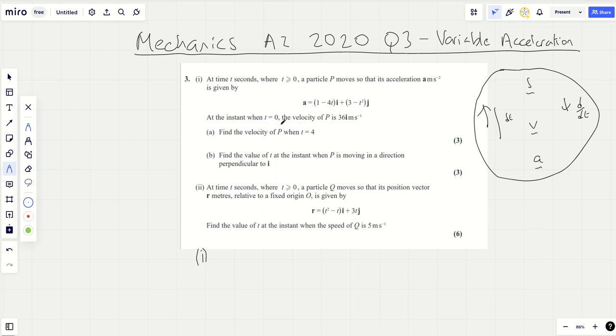So here's its acceleration. We know when T equals 0, the velocity is 36, 0. And so we've got to find the velocity when T is 4. So going from acceleration to velocity, we need to integrate. I'm just going to write it in a more convenient format, 1 minus 4T and 3 minus T squared, write it in column vectors. It's always easier if you ask me.